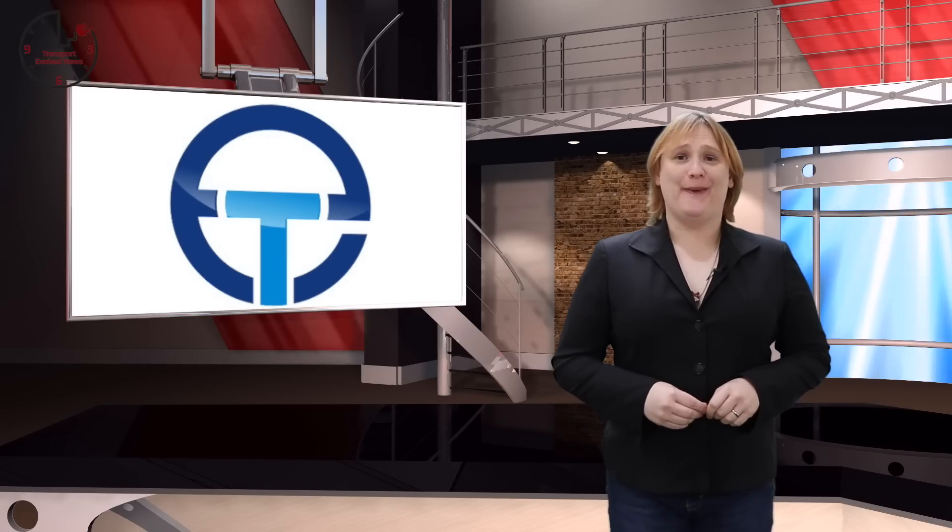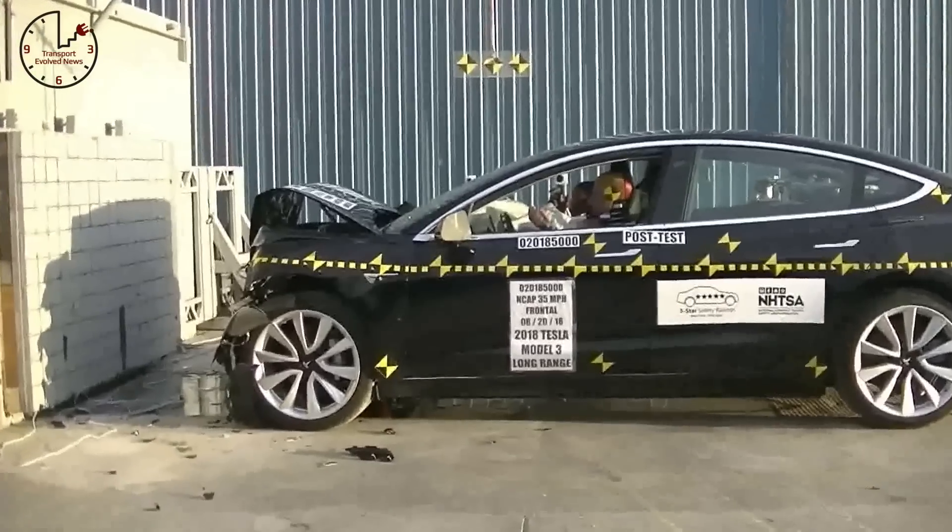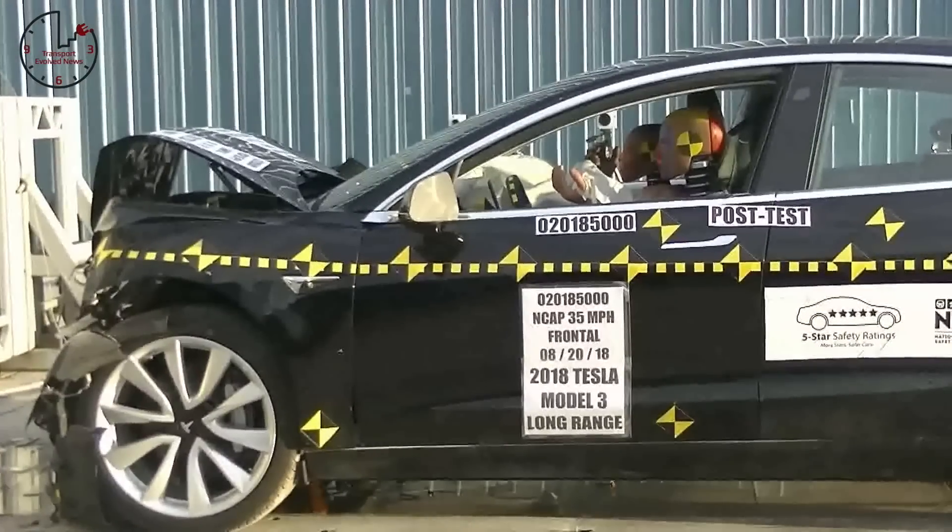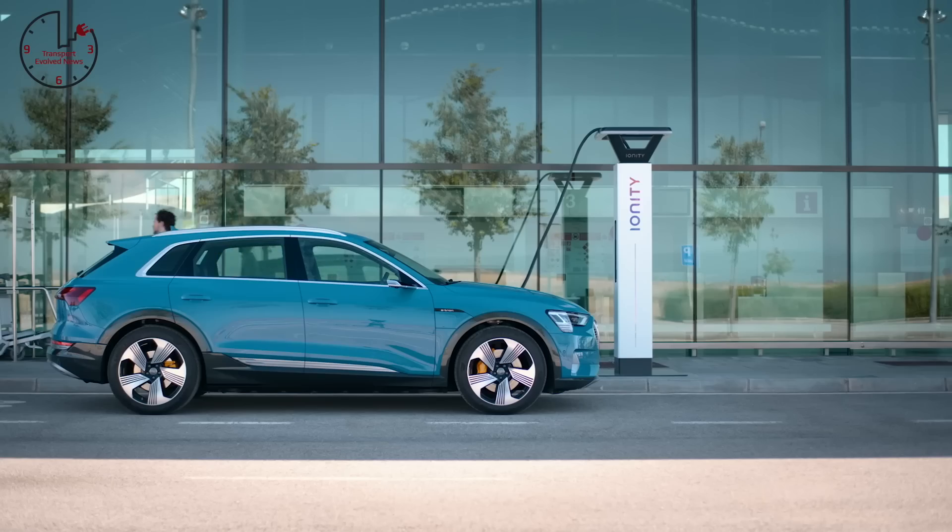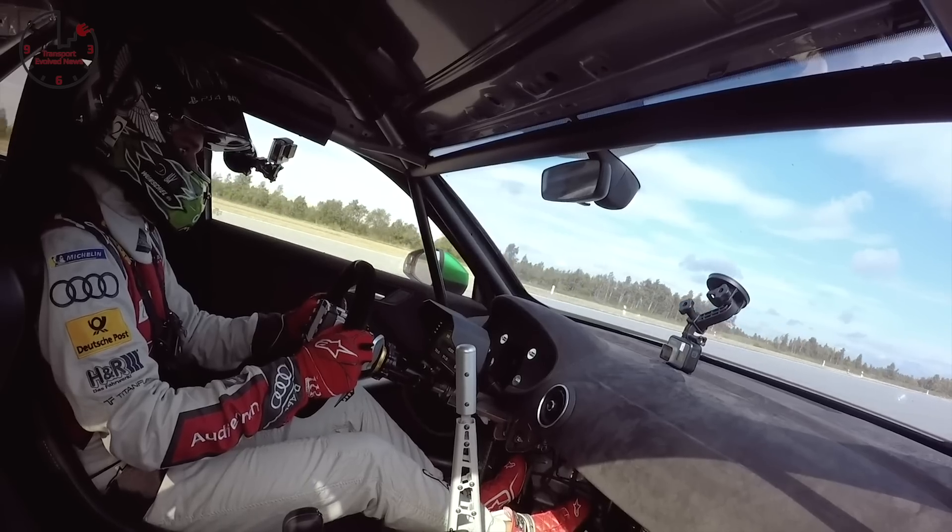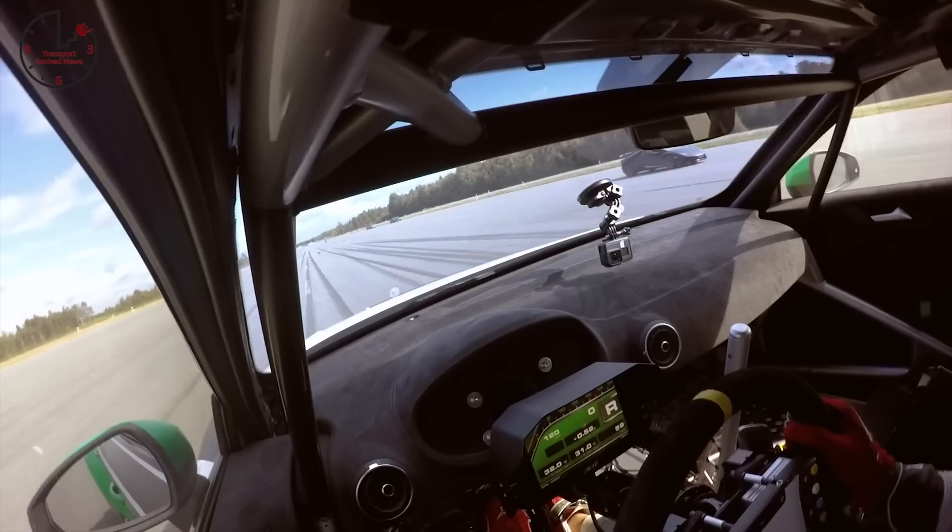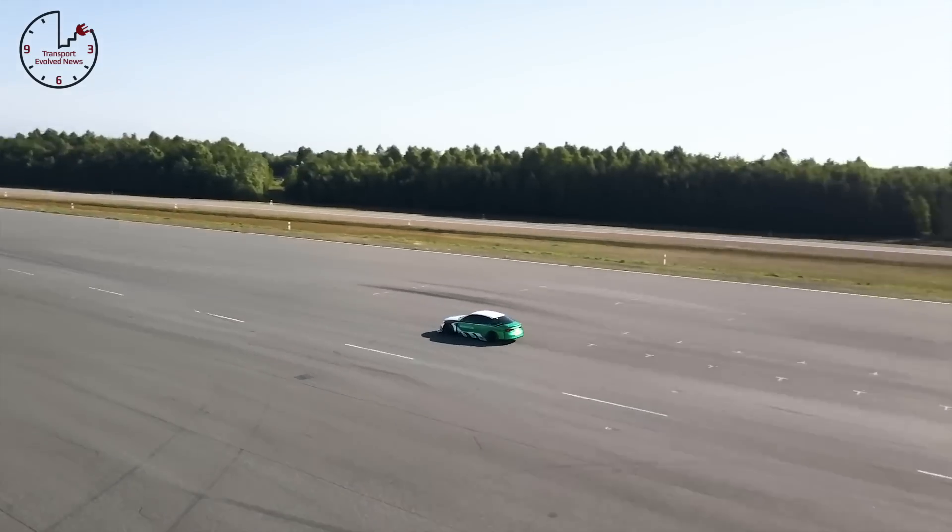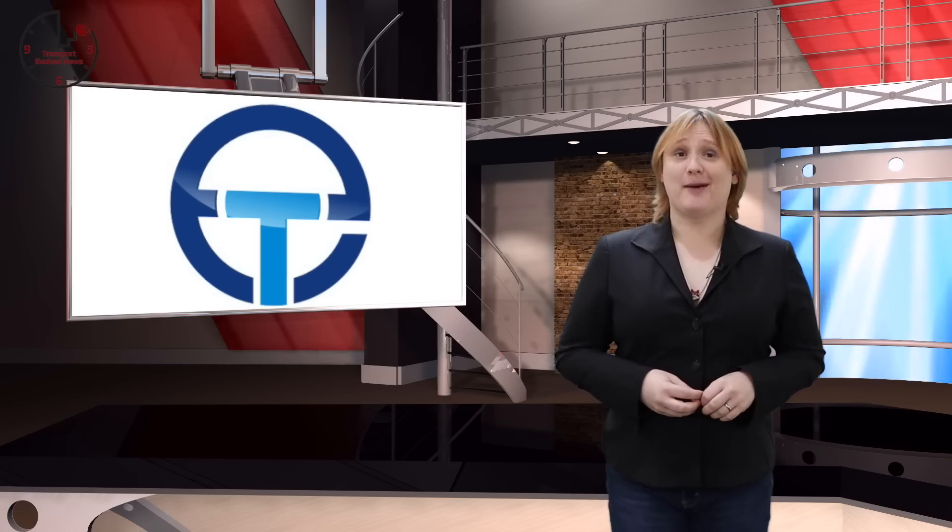Coming up on today's show, Tesla and NHTSA yet again discuss exactly what NHTSA's five-star crash tests do and do not say, Audi promises a 12 minute to 80 percent full recharge time for all of its electric cars from 2020 onwards, and Formula E race car driver Daniel Abt sets a new electric car record by driving backwards really, really fast. These stories and more, coming next.